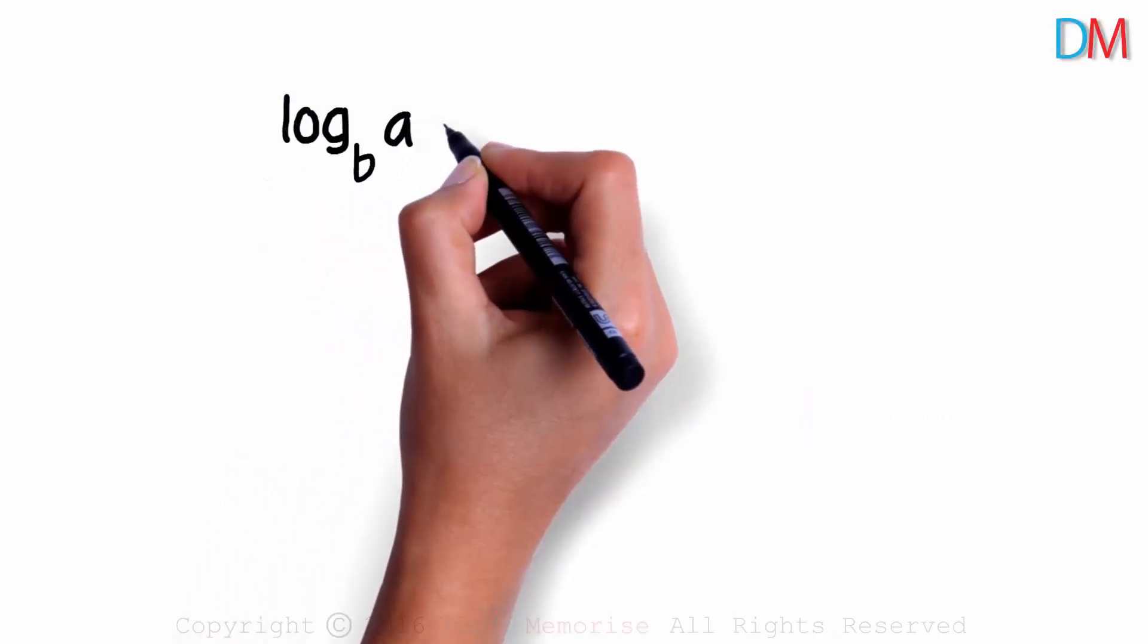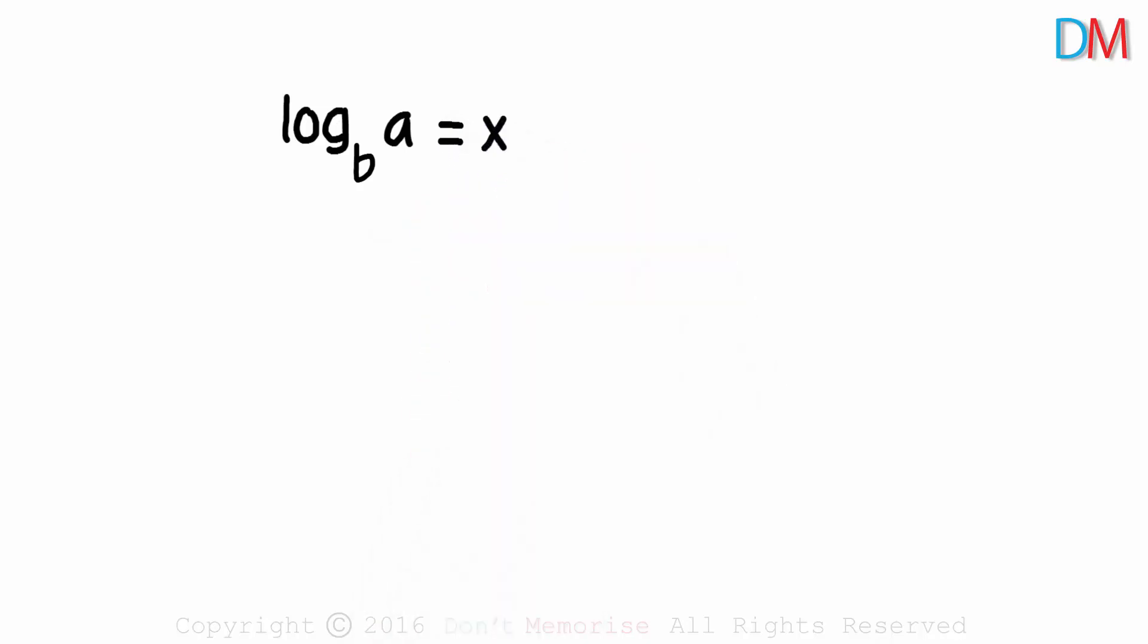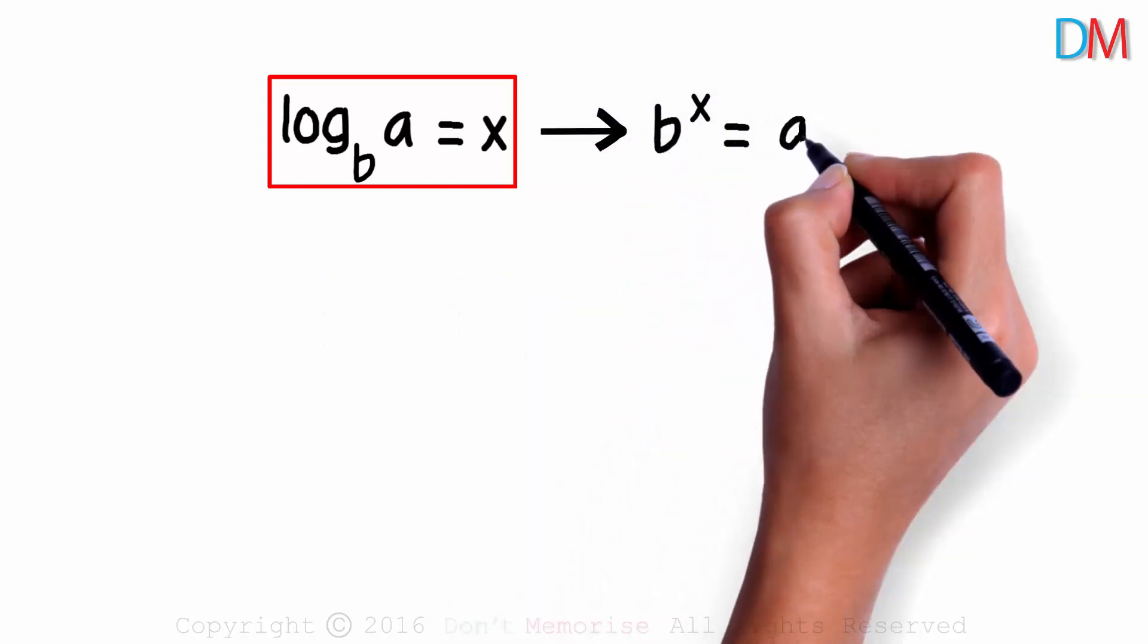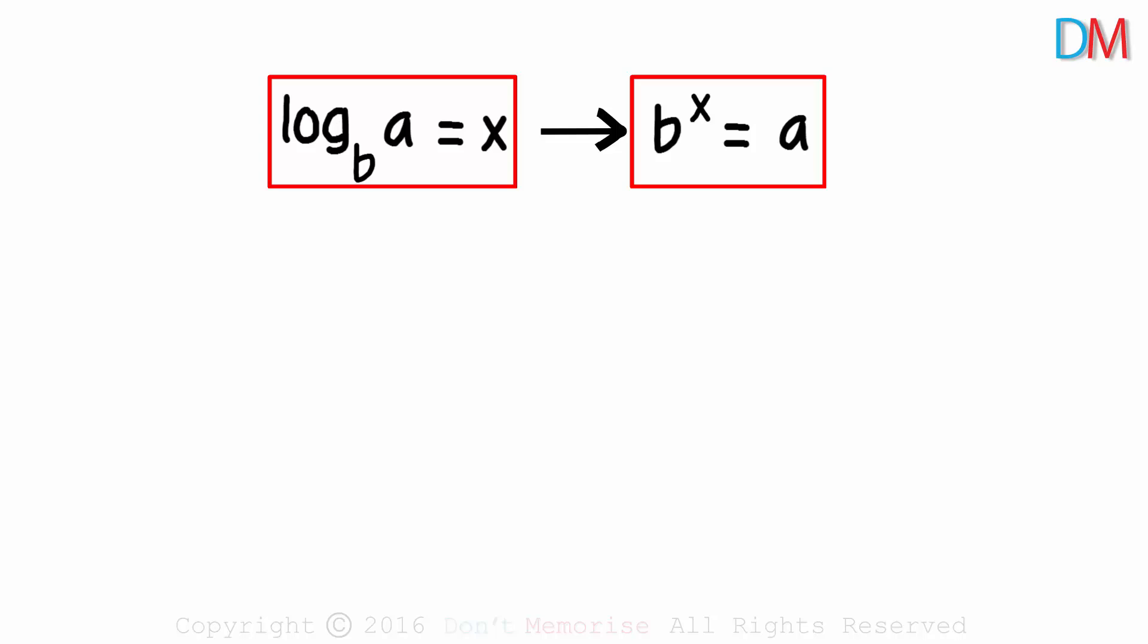The log of a to the base b is equal to x. How do we write this in the exponential form? We can write it as b raised to x is equal to a. Both equations tell us the same thing.